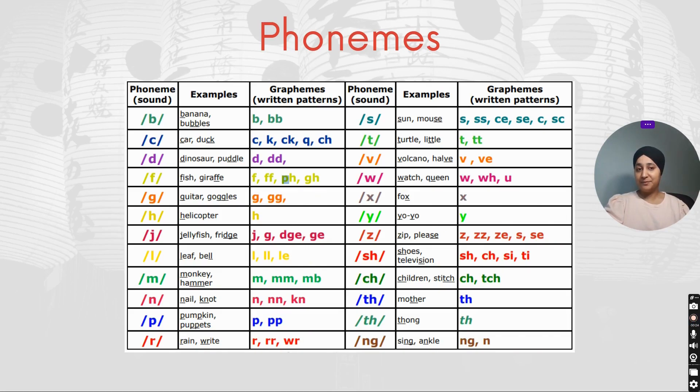For example, B in banana, C in car and duck, D in dinosaur and puddle, F in fish and giraffe, S in sun and mouse, T in turtle and little. There are so many sounds - we call them phonemes. You can see all those in this table.